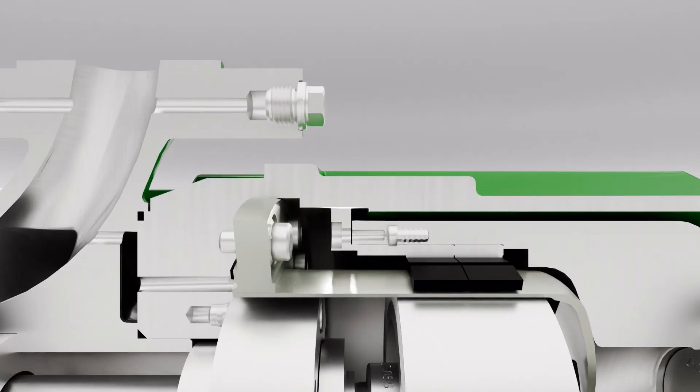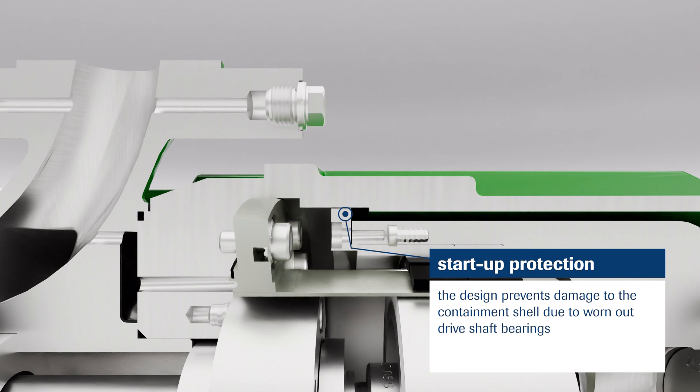To protect the containment shell in the event of a worn out roller bearing, the spacing of the magnetic coupling elements is designed to prevent damage to the containment shell.